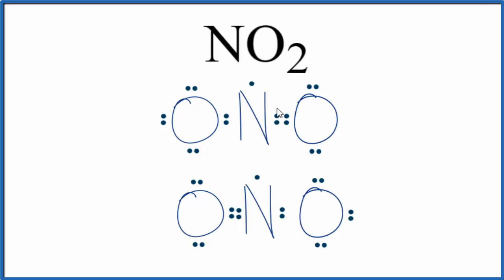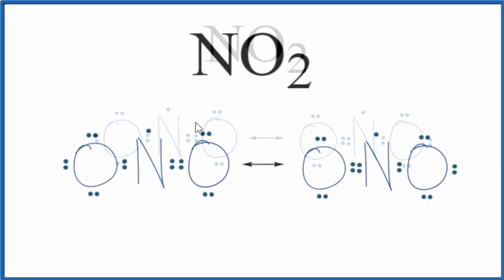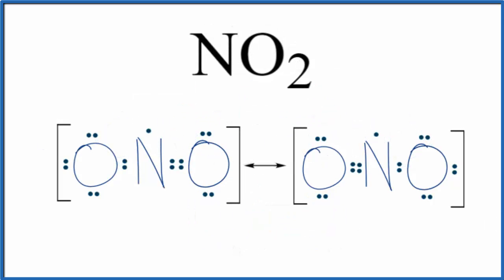These are what we call the major resonance structures—the major equivalent resonance structures—because we just flipped where the double bond is. You'll often see it written like this, with brackets placed around each one of the compounds. So these are our two equivalent resonance structures for NO2, nitrogen dioxide.